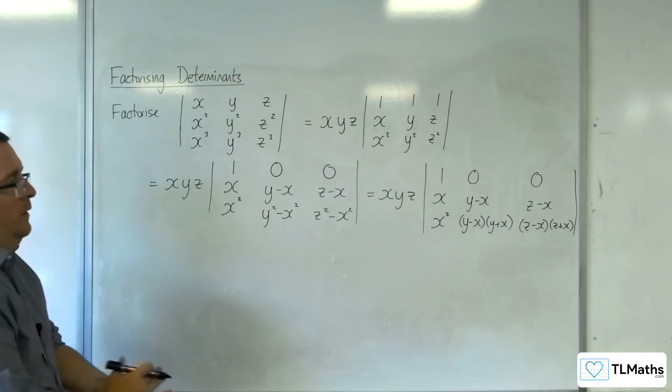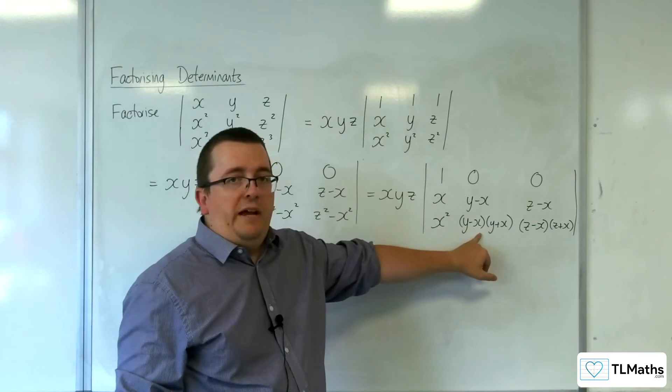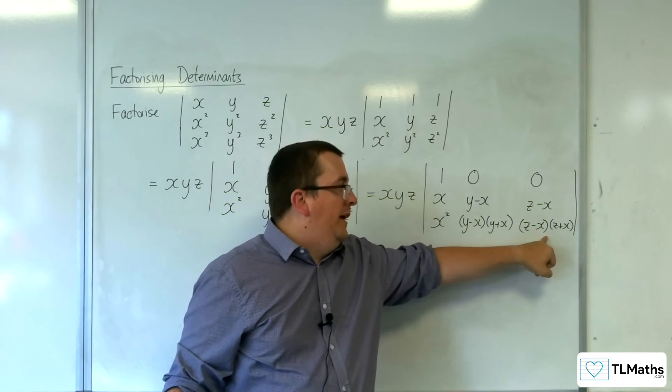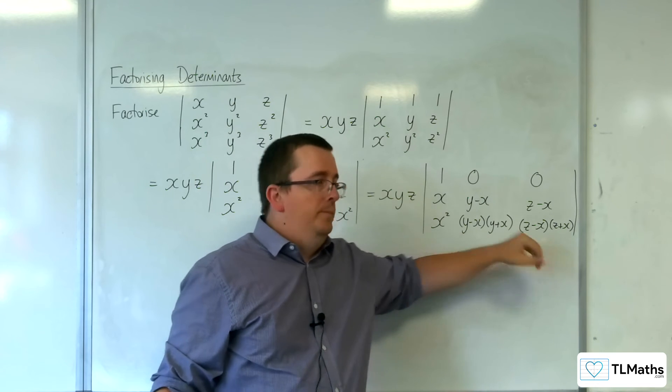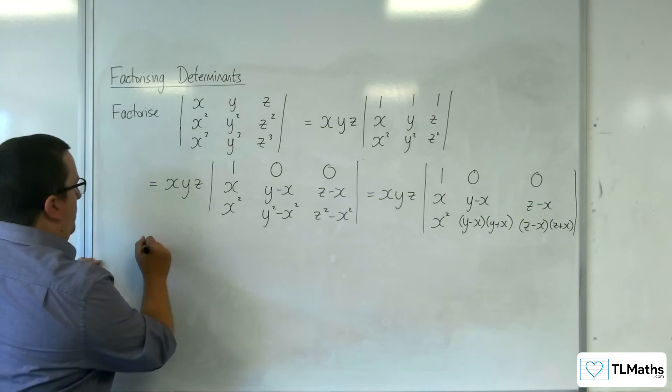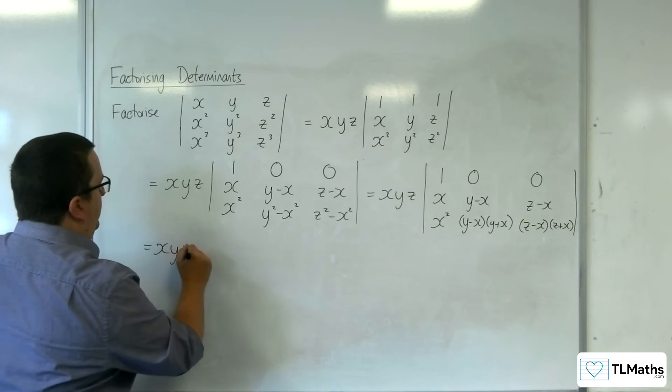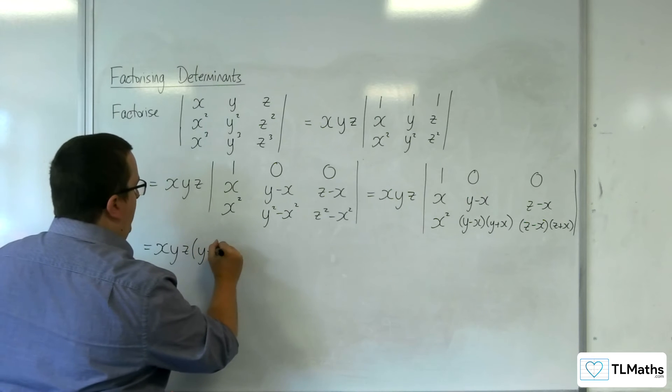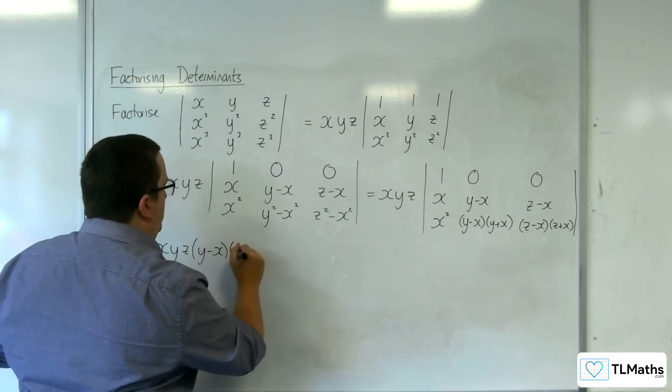So y minus x is now a factor of the middle column, and z minus x is a factor of the final column. So I can pull those out as well. I've got the x, y, z on the outside, now with y minus x and z minus x.